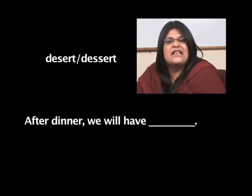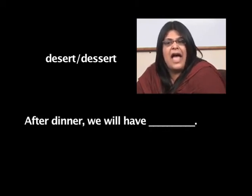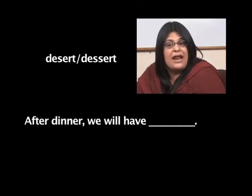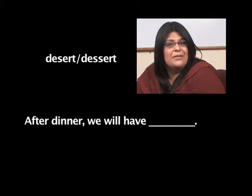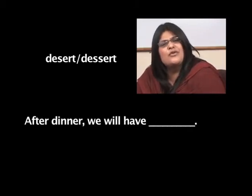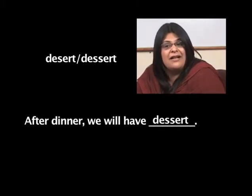Next: 'After dinner, we will have dash.' The options are desert and dessert. Desert refers to a barren place — the Registan. However, dessert is the sweet. So what would you like to have after dinner? After dinner, we will have dessert.